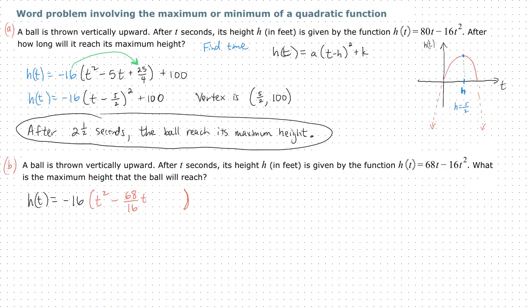Well, let's rewrite this to be a little simpler. h(t) = -16(t² - 17/4 t).